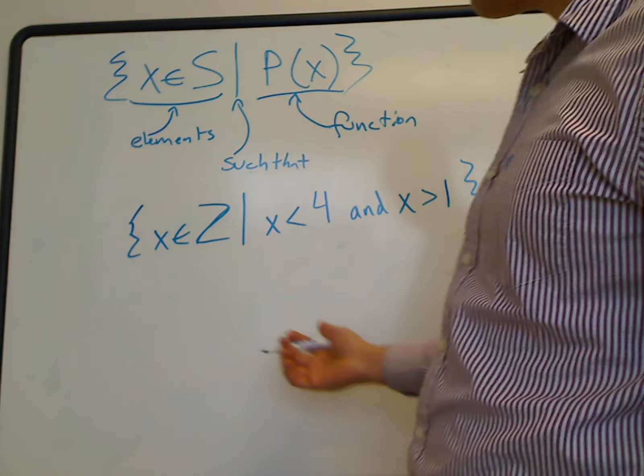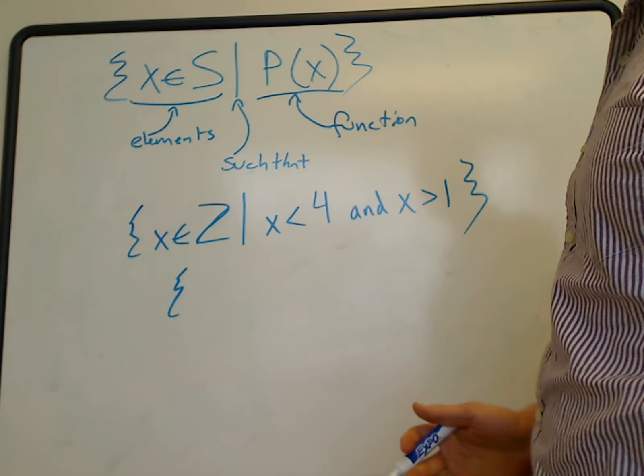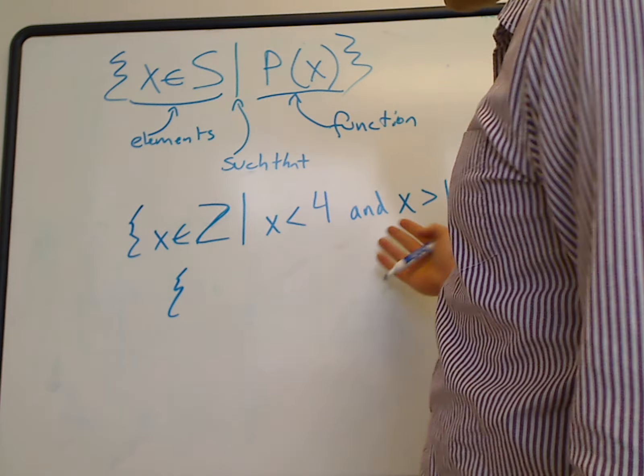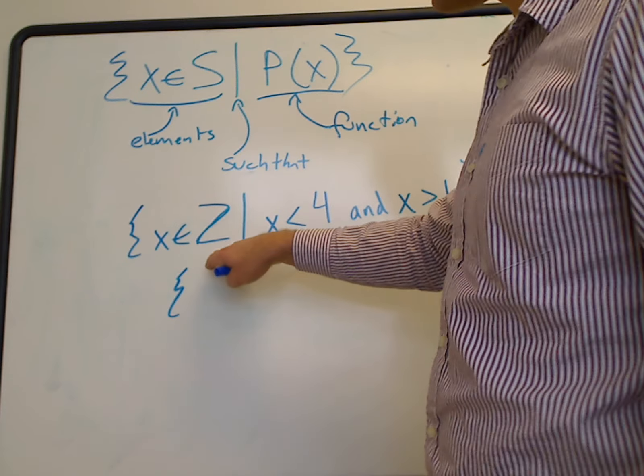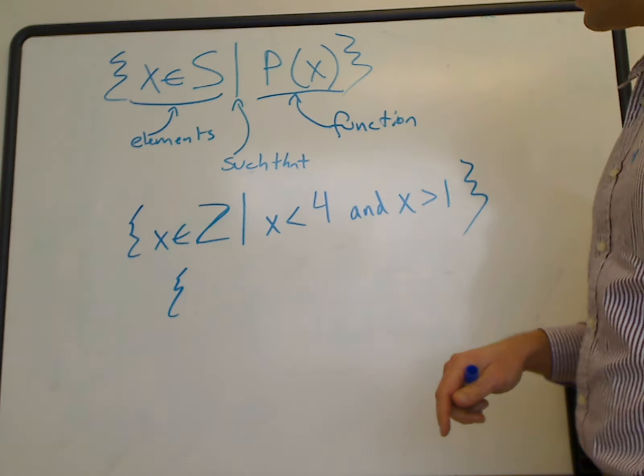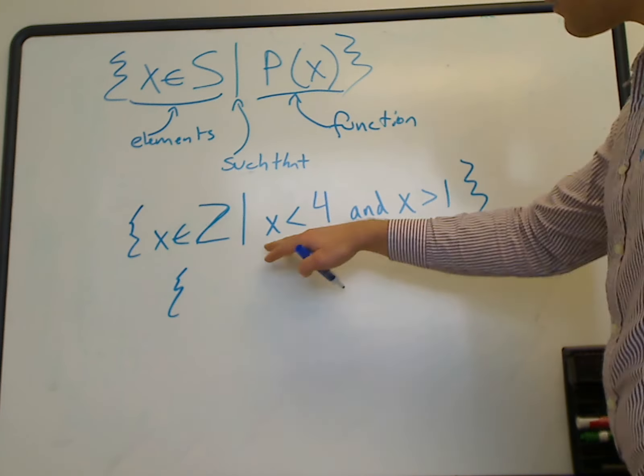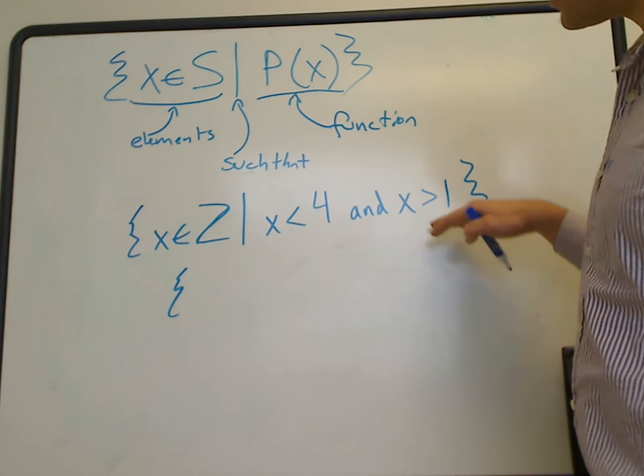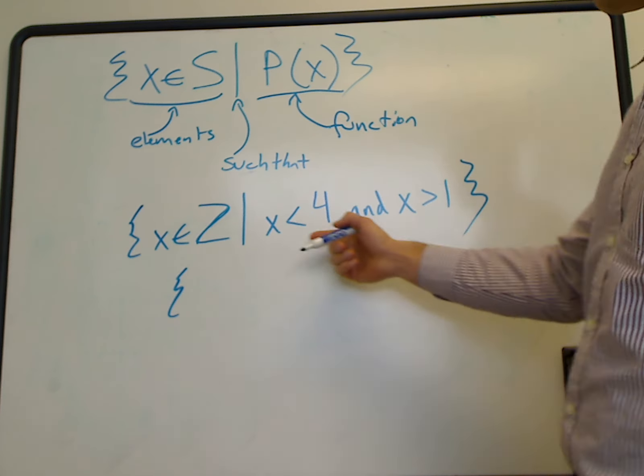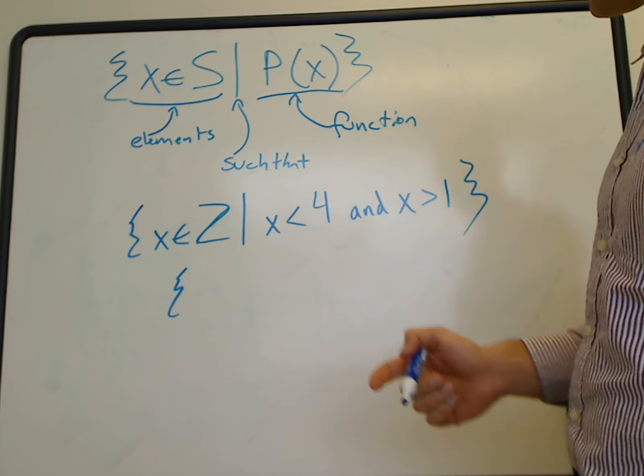We could rewrite this set or write out all the individual elements by analyzing when this is true. We're talking about elements of our set only being integers. The elements belong to the set if our function on the right is true - only for values of integers that are less than four and greater than one.